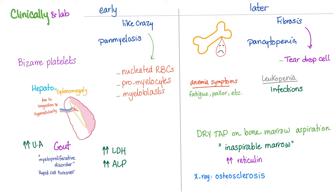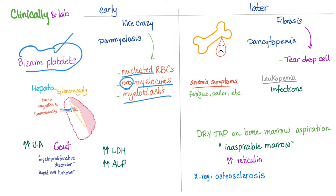Early on, with panmyelosis, you have lots of red blood cells including immature nucleated red blood cells, promyelocytes, and myeloblasts — all immature. You have bizarre-looking platelets. The marrow is pushing everybody outside, including some abnormal cells. You can have hepatosplenomegaly because the marrow needs help from extramedullary sites. You can have gout due to increased uric acid from rapid cell turnover.